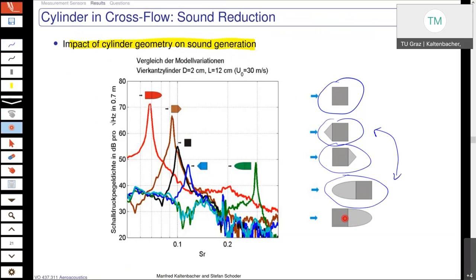Let's have a look — as you can see here, the highest sound pressure level we get exactly for this configuration. You see here the spectrum in red. We see that we decrease the shedding frequency, and we also nicely see that we have here the strongest value of the radiated sound at the shedding frequency. So you see this is number one.